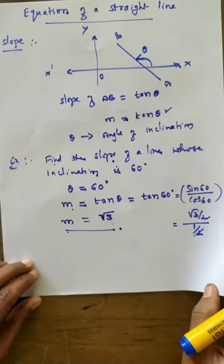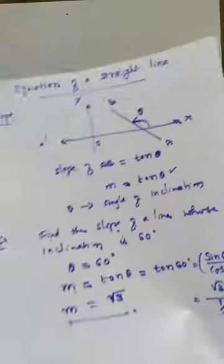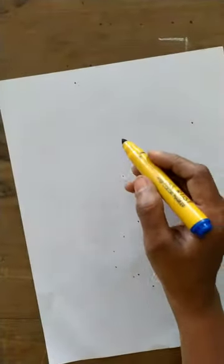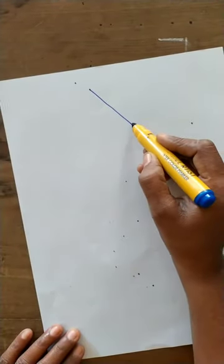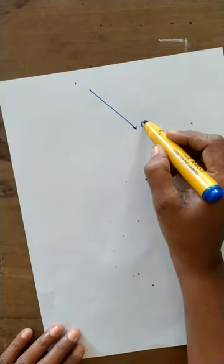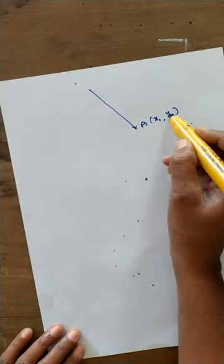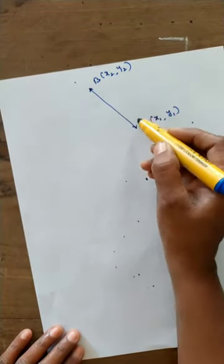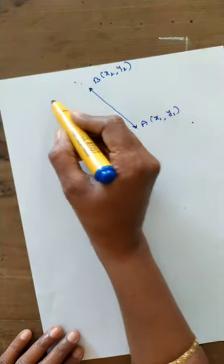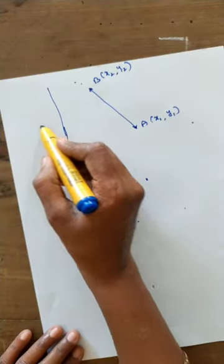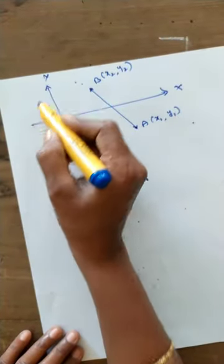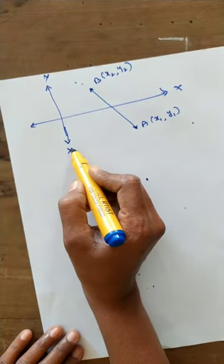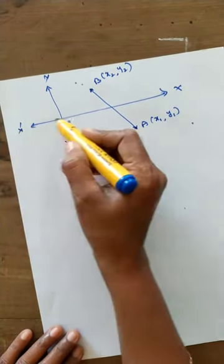Instead of being given the angle, suppose the line passes through two points. A line passes through two points: point A at (x1, y1) and point B at (x2, y2). This is the x-axis and y-axis.